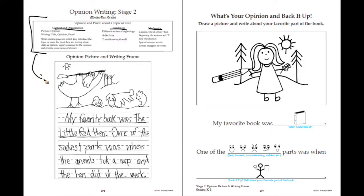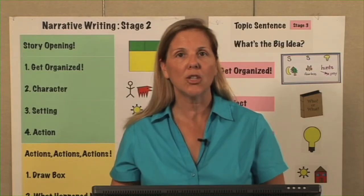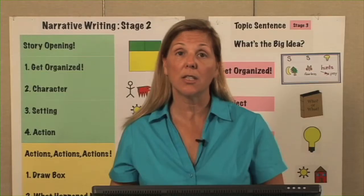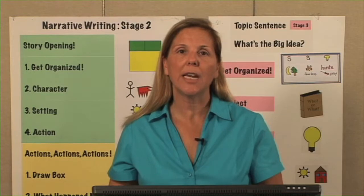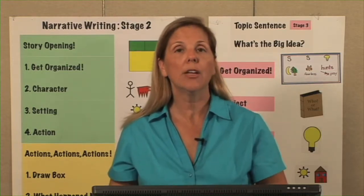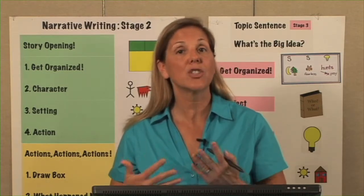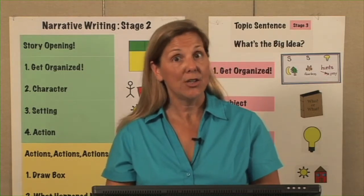Down below we have an example of a finished piece of writing at stage two — notice there's a picture and then just a couple of sentences for the opinion. On page 197 you'll see a template students will use to understand what they need in their opinion and how to form their sentences. Now let's look at what we do at stage two.